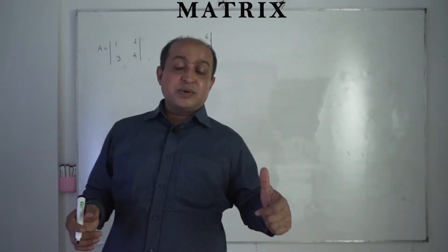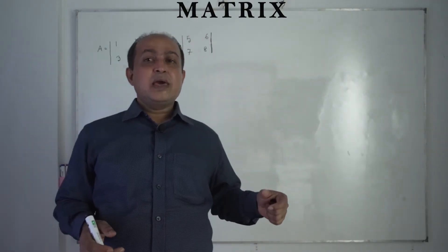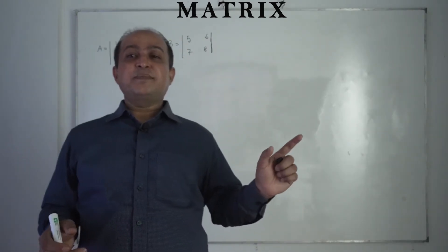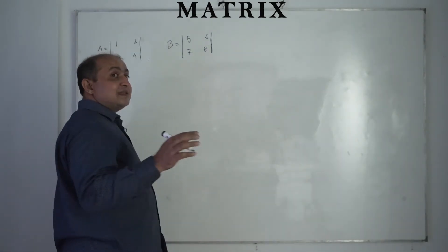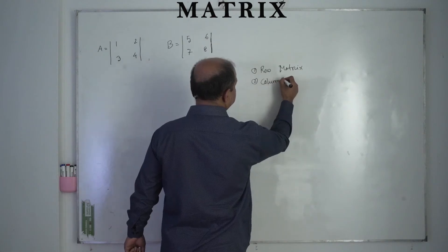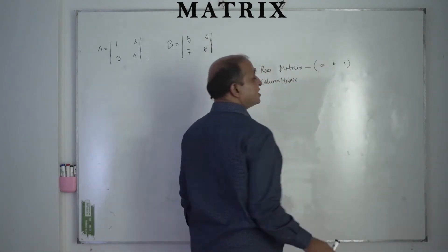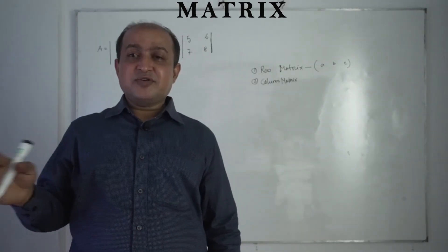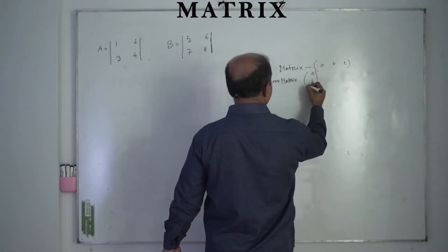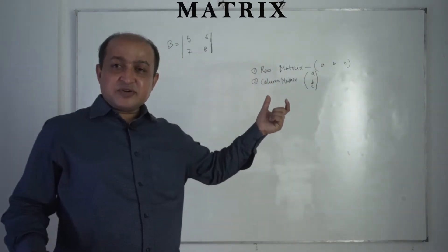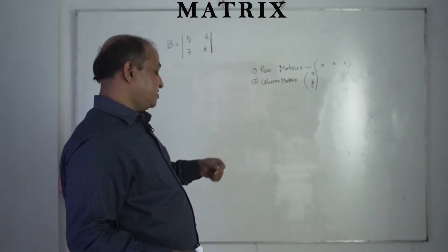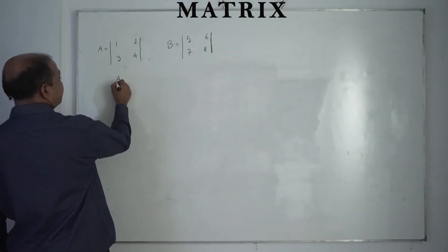The matrix operations are: adding one matrix to another, subtracting one matrix from another, multiplying one matrix by another, and making a ratio of one matrix with another. There are also two special types: the row matrix, which has only a single row with different columns; and the column matrix, which has only a single column with different rows.